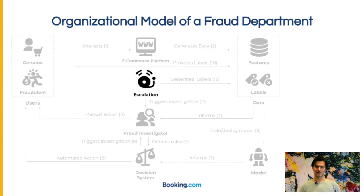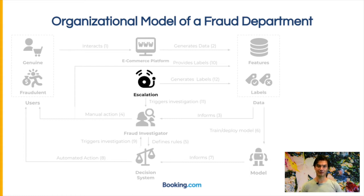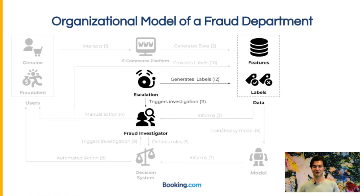There is one more component: the escalation, which represents everything external to the system that can additionally trigger investigations or provide information on what is fraud or not. This includes, for example, a customer service department who might get a phone call that puts us on the track of investigating a certain transaction, or credit card agencies who might give a notification of fraud. This might trigger investigations, or in some cases already fully tell us that certain behavior was fraud, in which case it can feed directly into the labels.